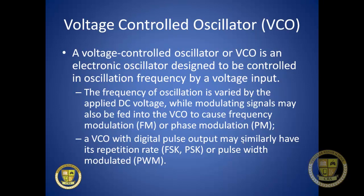A VCO, or voltage controlled oscillator, is an oscillator whose frequency is controlled by a voltage input. The frequency of oscillation varies with applied DC voltage, and modulating signals can be fed in to cause frequency modulation (FM) or phase modulation (PM). A VCO with digital pulse output can also have its repetition rate modulated using FSK, PSK, or pulse width modulation (PWM). The key difference: crystal oscillators are fixed at a particular frequency based on the material, while a VCO can adjust its frequency based on the input voltage.